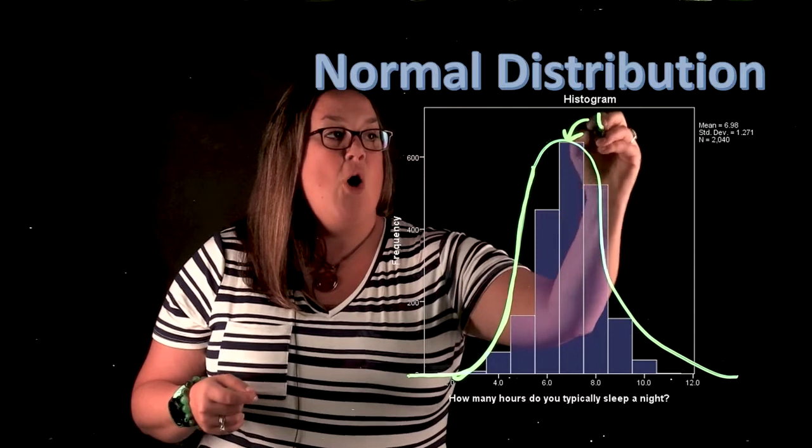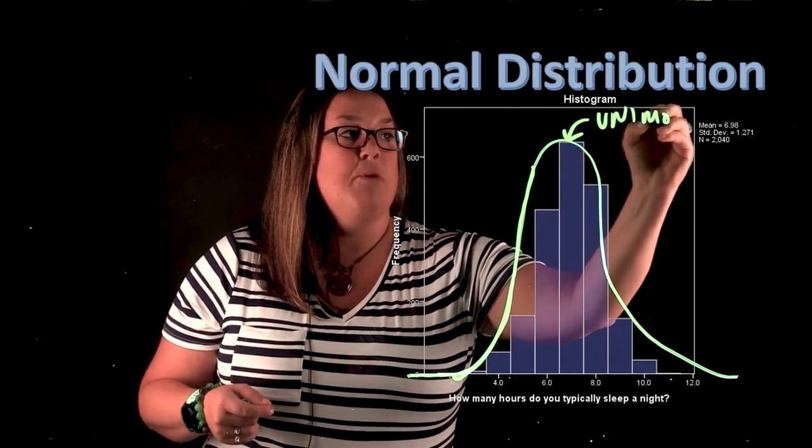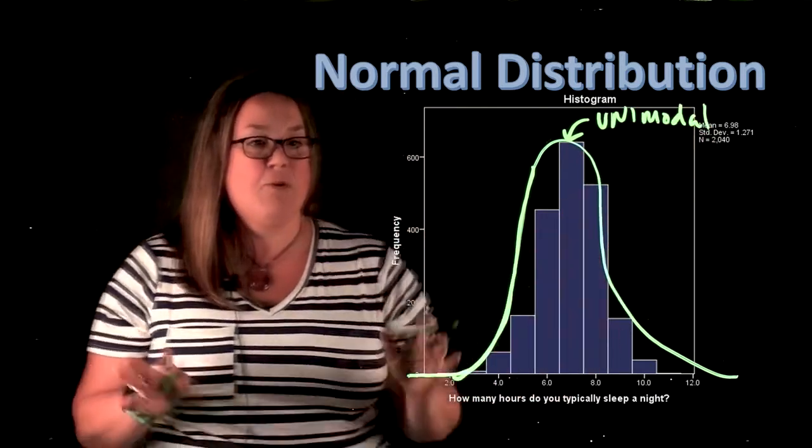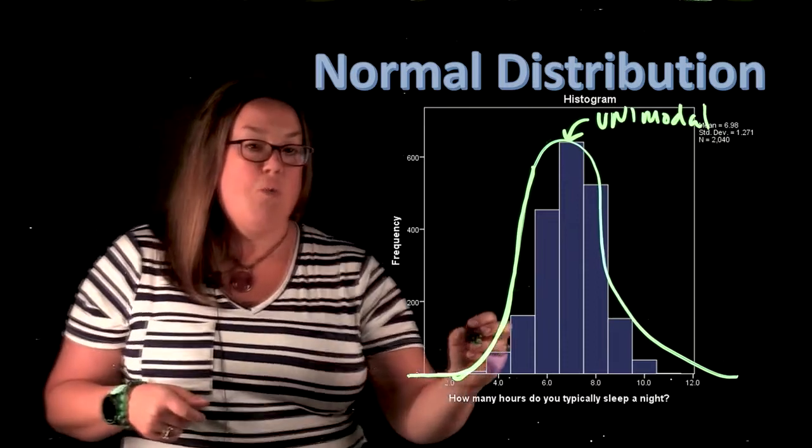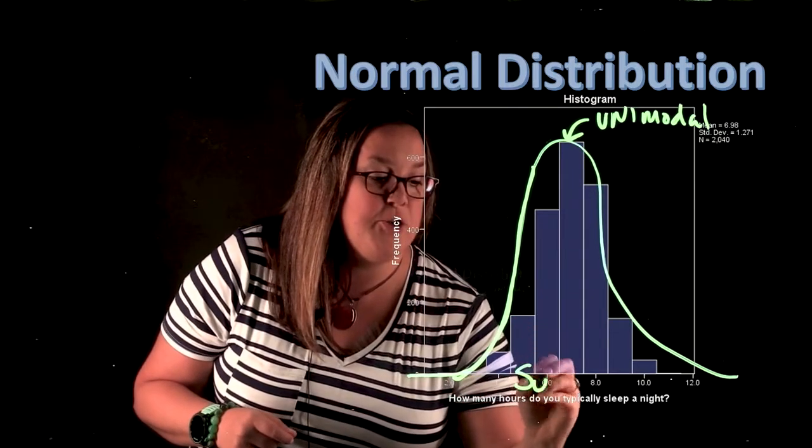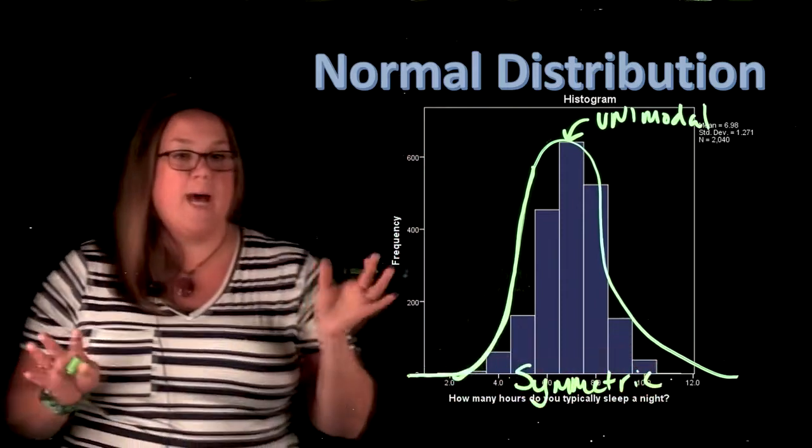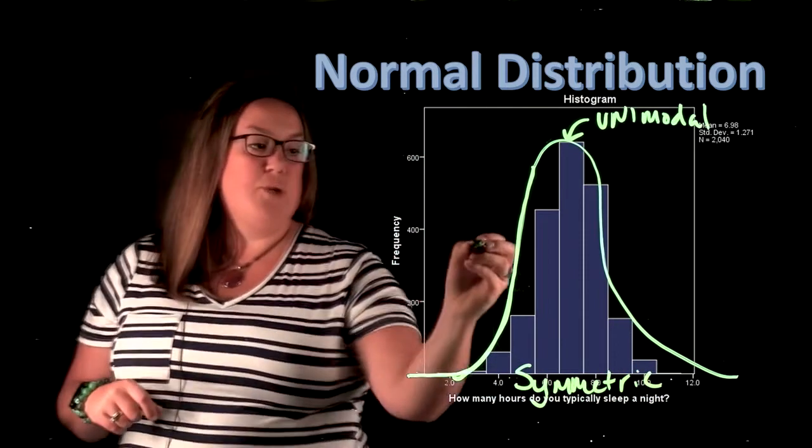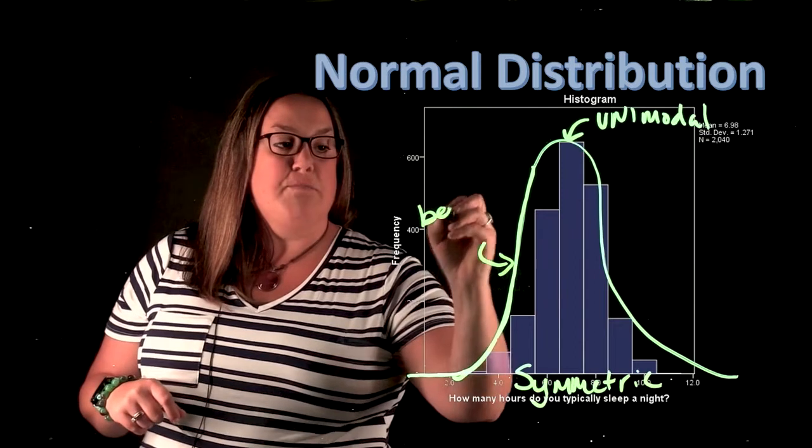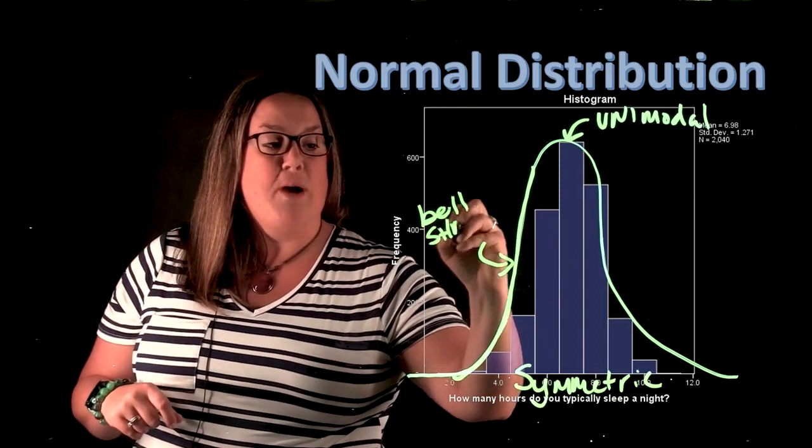It is what we call unimodal. And remember, that means there's just a single prominent peak. We would call this symmetric because the right and left-hand sides are approximately equal to each other. So it's bell-shaped. That would be the shape I would describe it.